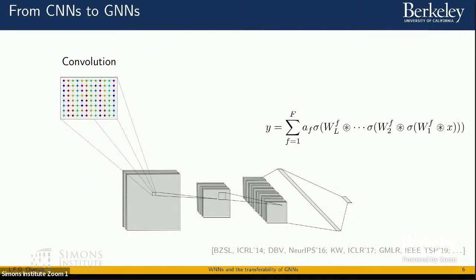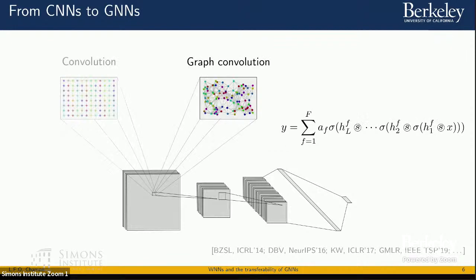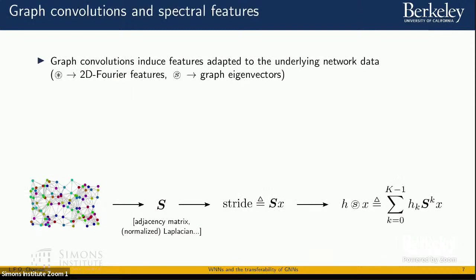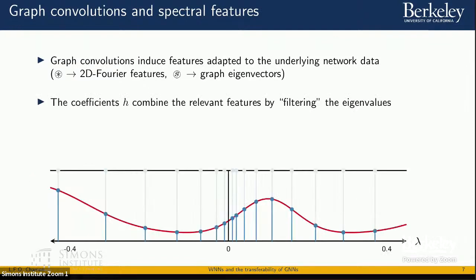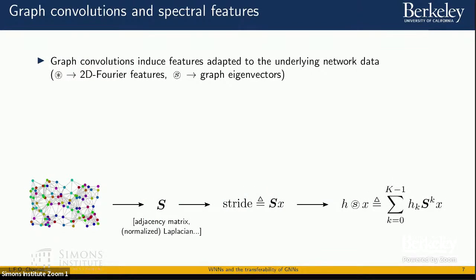To get from convolutional neural networks to graph neural networks, we simply replace regular convolutions with graph convolutions — that's the only change. Graph convolutions are attractive because they induce features adapted to the underlying network of our problem. The role of the network's coefficients is to select and combine these features by filtering the eigenmodes induced by the linear operator we defined as the stride of our convolution.